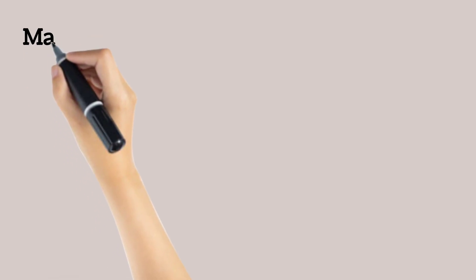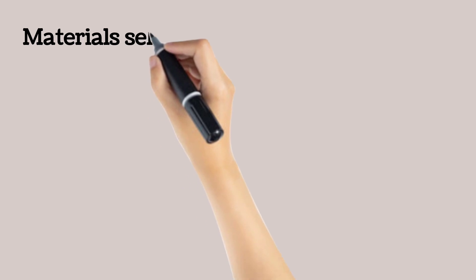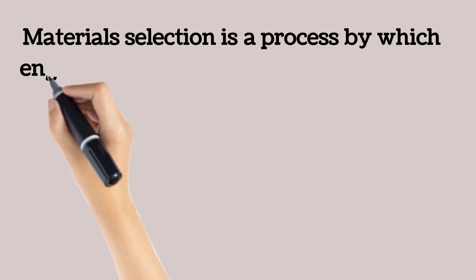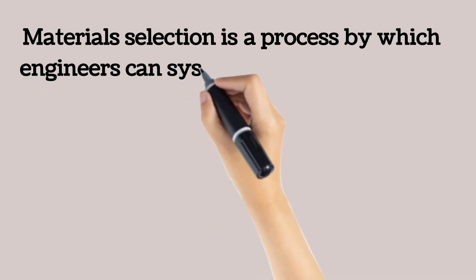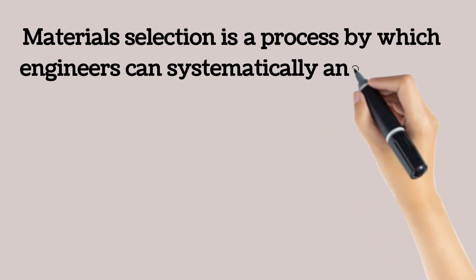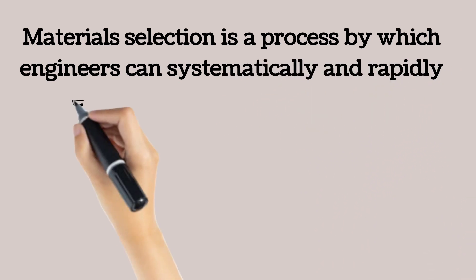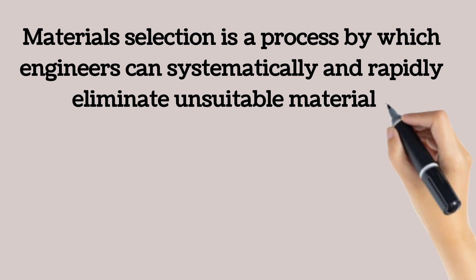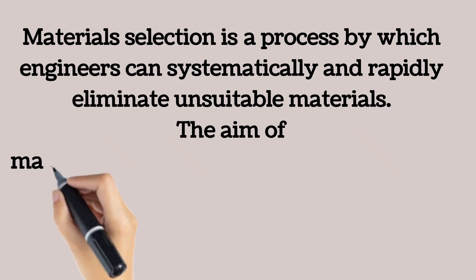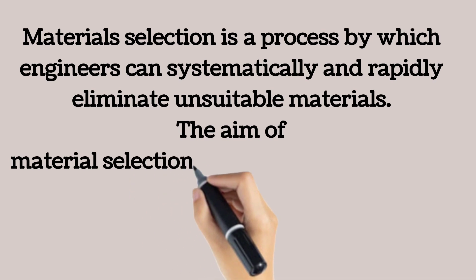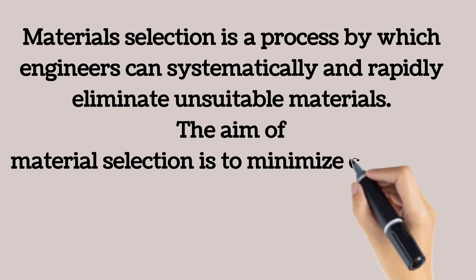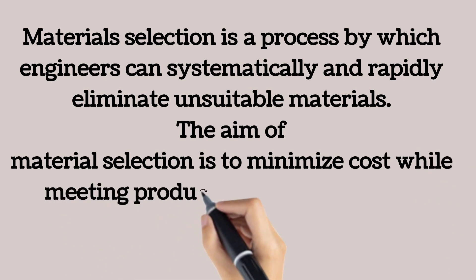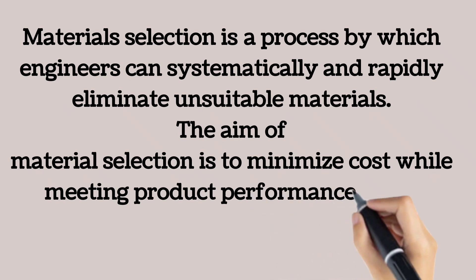Material selection is a step in the process of designing any physical object. It is an ordered process by which engineers can systematically and rapidly eliminate unsuitable materials and identify the one, or a small number of materials, which are the most suitable. The main goal of material selection is to minimize cost while meeting product performance goals. An objective is a quantity, property, or material index that we want to minimize or maximize in our selection of a material.